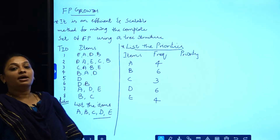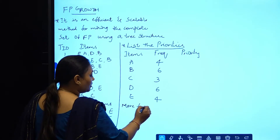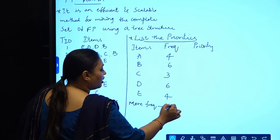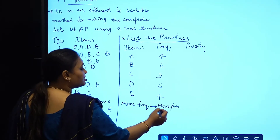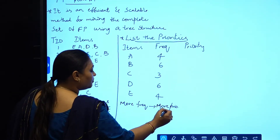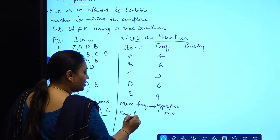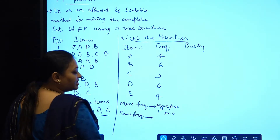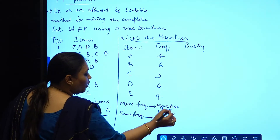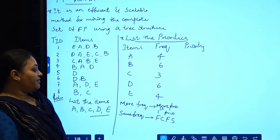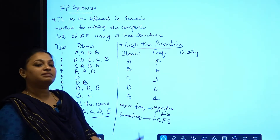To find the priorities: whenever an item has a higher frequency, it is given a higher priority — that is, the first priority. If two items have the same frequency, we follow FCFS — First Come First Serve — meaning whichever item appears first in the list gets the higher priority.